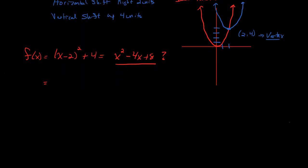So if I want to expand on x minus 2 squared, this would give us x minus 2 times x minus 2. We would still have this value of plus 4 at the end. So this would give us x squared, foiling this out, minus 2x, minus 2x. Minus 2 times minus 2 gives you a value of plus 4.